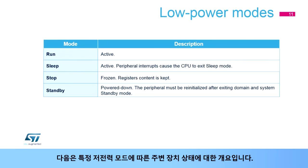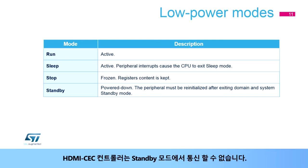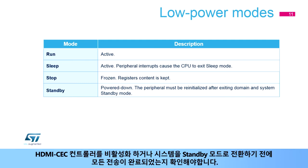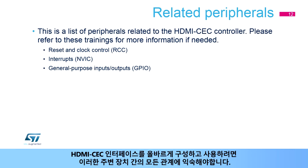Here is an overview of the peripheral status at specific low-power modes. The HDMI CEC controller is active in run and sleep modes, but frozen in stop mode. The HDMI CEC controller cannot communicate in standby mode. It is important to ensure that all transmissions are completed before the controller is disabled or the system switches to standby mode. Users should be familiar with all the relationships between related peripherals to correctly configure and use the HDMI CEC interface.